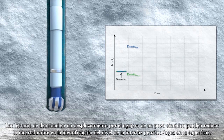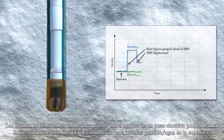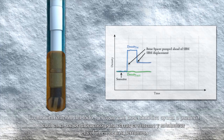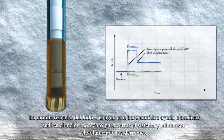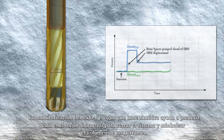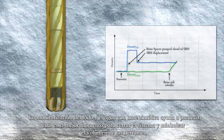Density readings during a synthetic wellbore displacement can reduce uncertainty in identifying the oil-water interface at the surface. Monitoring the synthetic-based mud and water helps to predict the optimum moment to close in the system and minimize the volume of slops.